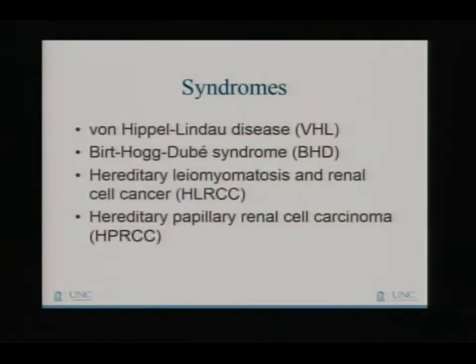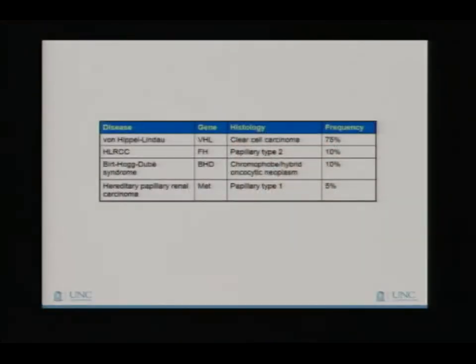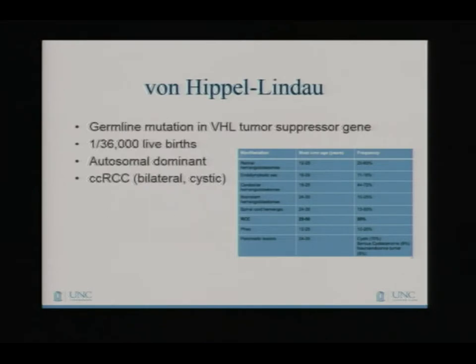These are the four major syndromes associated with kidney cancer as far as acquired genetic mutations from mom or dad. I'm going to go over what each of these looks like, what types of kidney cancer are associated with them, and then discuss whether genetic testing is recommended for you or your family members, or at least a consult with a genetics counselor. This table goes over the four syndromes, the particular gene that is mutated, and the histology — what the kidney cancer cells look like under the microscope.